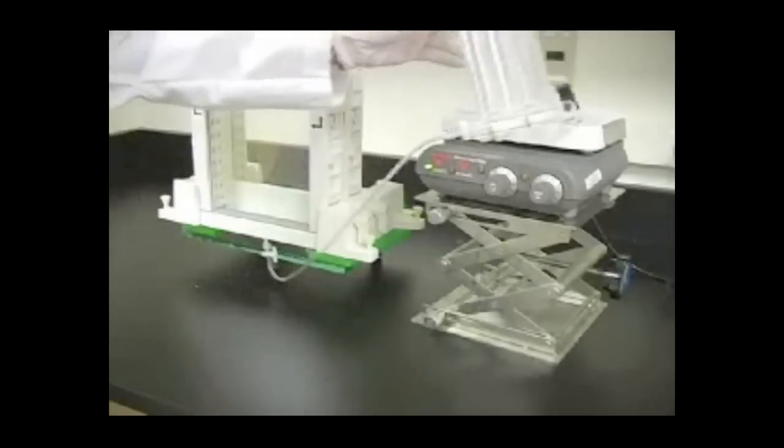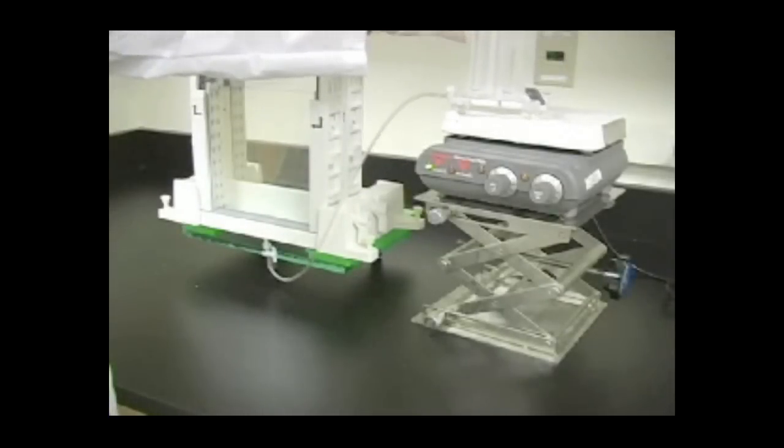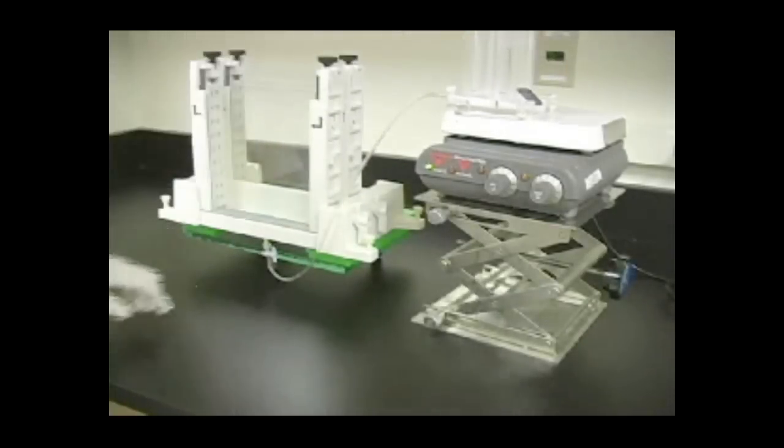Place the gradient former on a stir plate that sits on a raised platform so that the former is above the top of the gel sandwich. This creates a hydrostatic head large enough to pour the gels within 10 minutes from the time the initiators are added to the light solution.